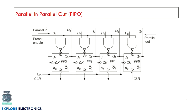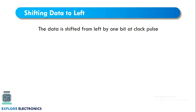In Parallel In Parallel Out (PIPO), input is given in parallel from four input lines and output is also read in parallel. This is very simple — each flip-flop stores a single bit, there is no transfer of bits between flip-flops required. Data is loaded and retrieved directly, with no shifting occurring.